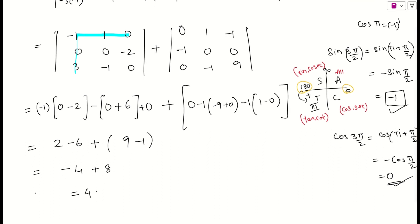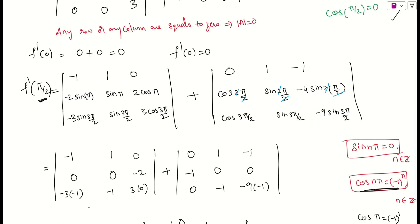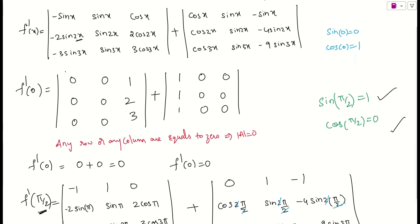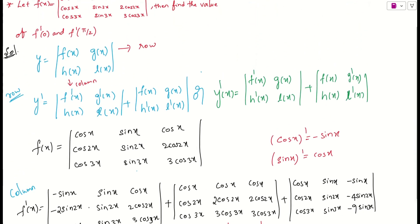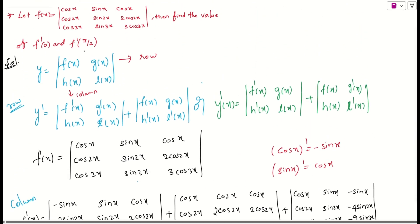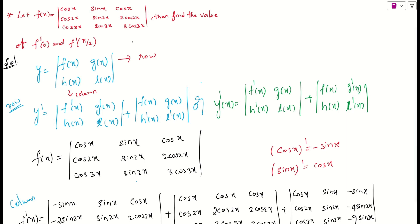So 8 − 4 = 4. This is our final answer: f'(π/2) = 4. In this single problem, many topics are included — trigonometry, determinants, derivatives, and evaluating angles. f'(0) = 0 and f'(π/2) = 4.